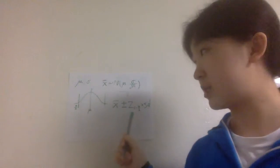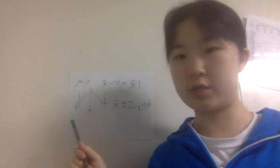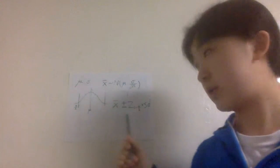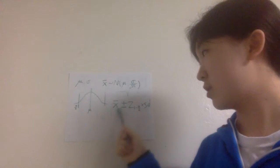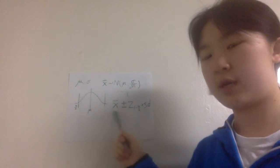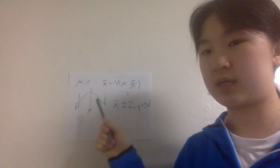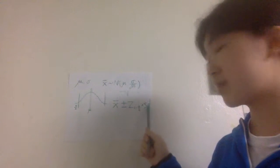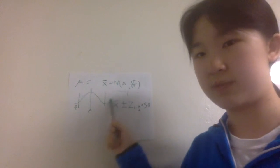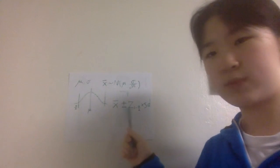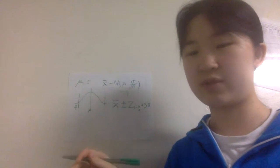This is just an example for estimating the population mean. You can do the same thing to estimate a population proportion. In that case, your x-bar will be your sample proportion. You always use an unbiased estimator for the population parameter you are interested in, and the standard deviation becomes the standard deviation of the sample proportion, which is the square root of p times (1 minus p) over n.